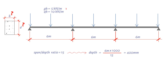Next, we need to work out the total ultimate load, which is 1.4 times the dead load of 5 kilonewtons per meter, plus 1.6 times the imposed load of 10 kilonewtons per meter, times the span of 6 meters. This results in a value of 138 kilonewtons.